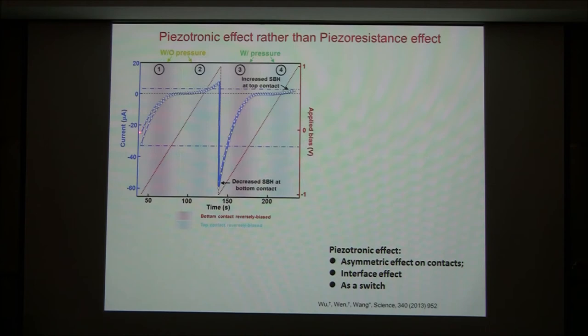Before we apply the pressure, you measure the transport when sweeping the bias from reverse bias to positive bias. Now after you apply the pressure, let's compare. On the positive bias, this was the current. After you apply the pressure, this was the current — the current reduces at positive bias. But look at the current at reverse bias — it increases.